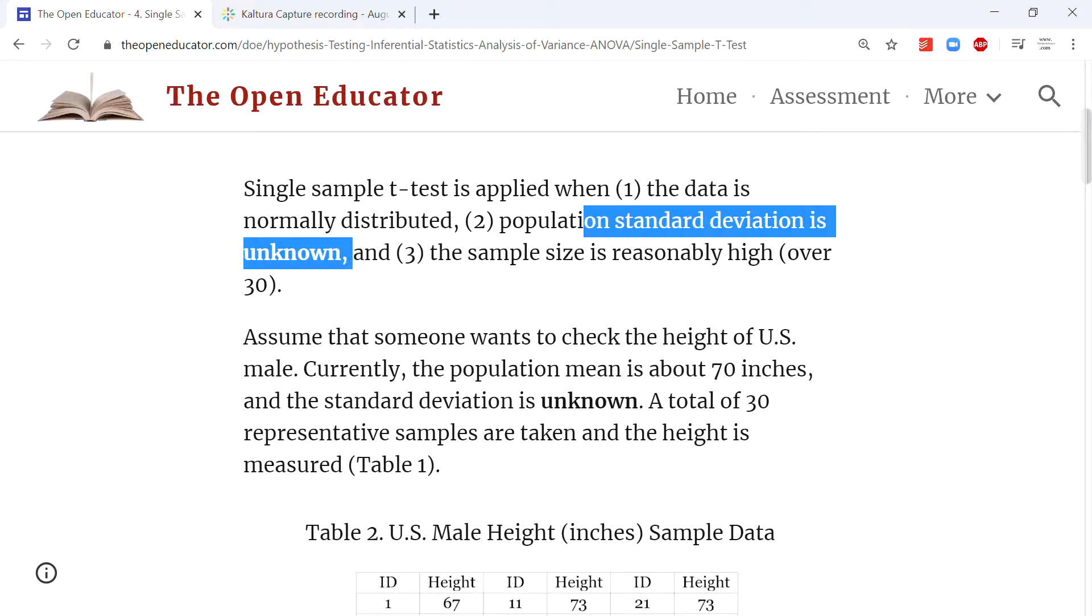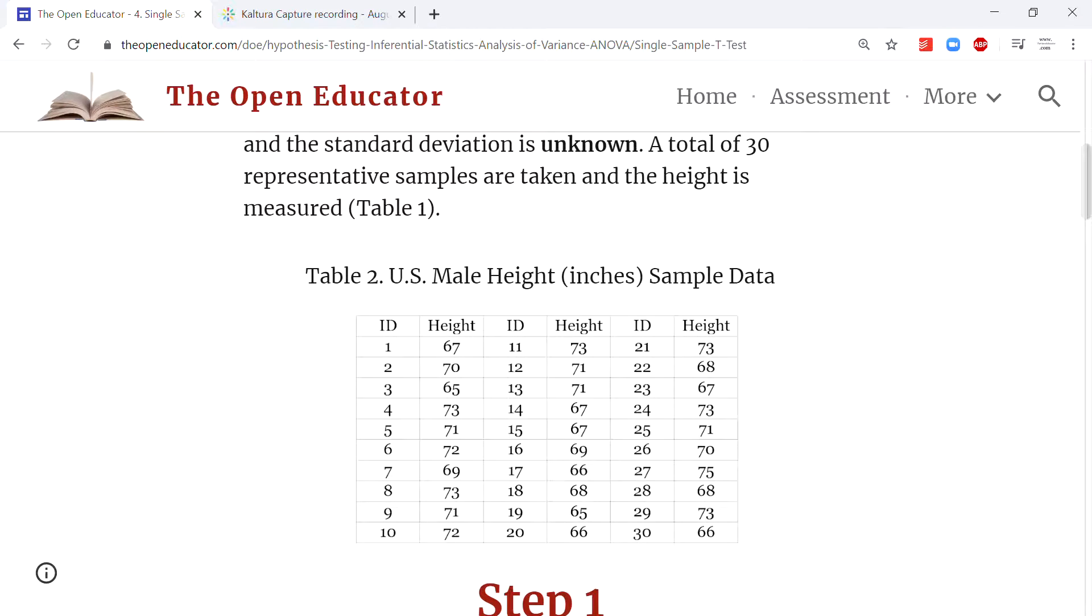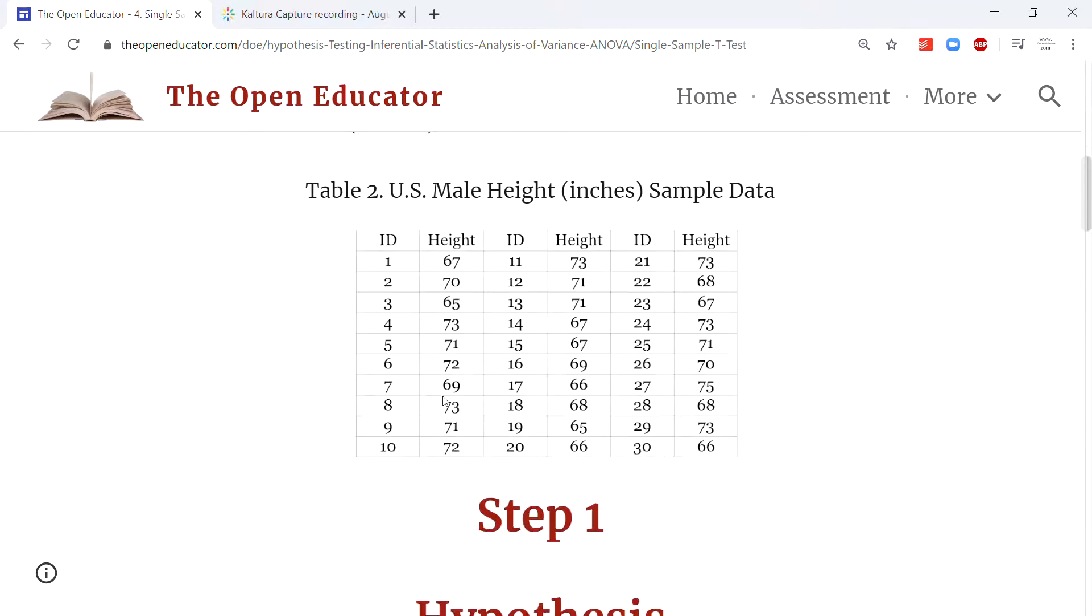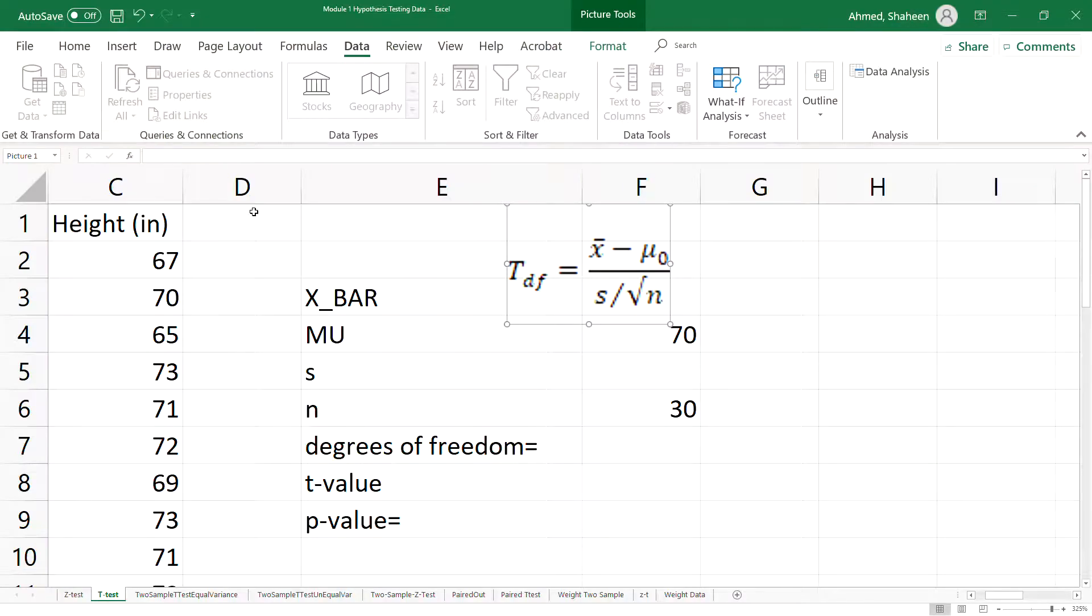To collect data, simply randomly select 30 or more US males from the population. This is the sample dataset.